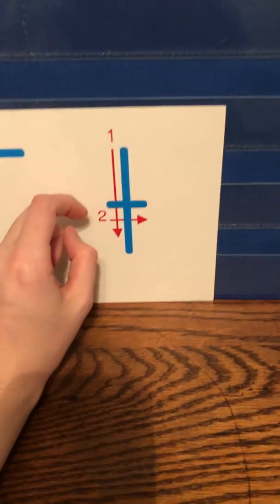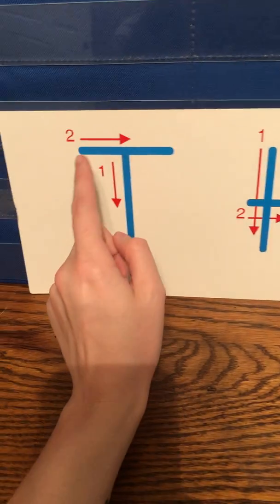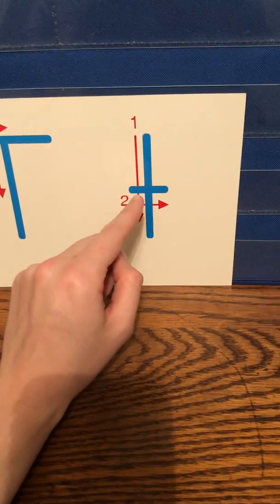Now we're going to talk about lowercase T. Lowercase T is also really simple. Only the line, instead of being up here like for the capital, it is in the middle.